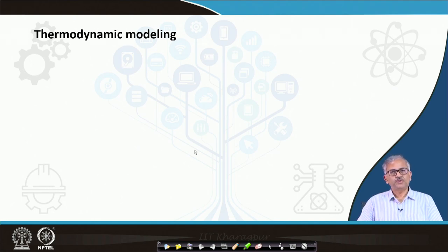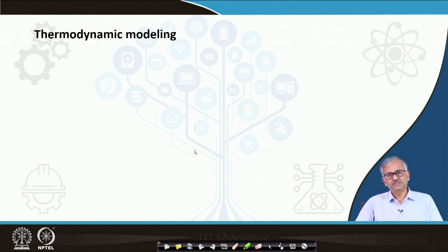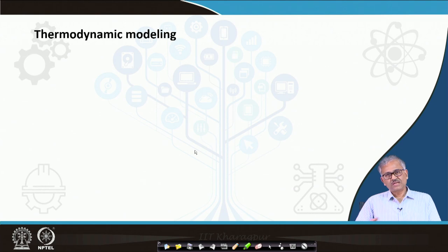First let us talk about thermodynamic modeling. As the name suggests, you assume the reactor is in thermodynamic equilibrium. You can apply a thermodynamic database like FactSage and calculate what will be the output — what will be the phase constituents at equilibrium temperature. If you want to calculate the heat of fusion, all these things are possible. Basically, the thermodynamic model can capture the saturation level of the product. It does not consider the kinetics of the process, like how the phase evolves with time or interaction between phases.